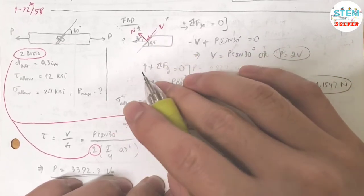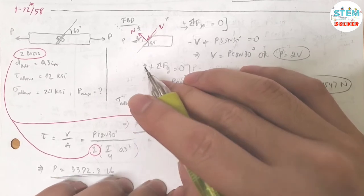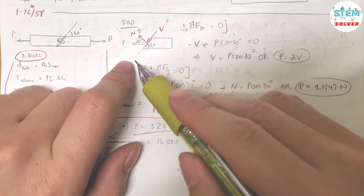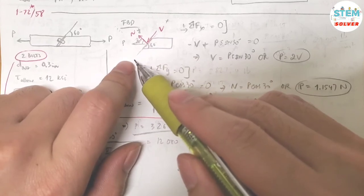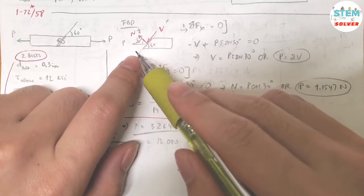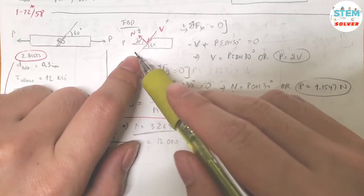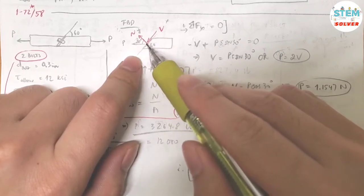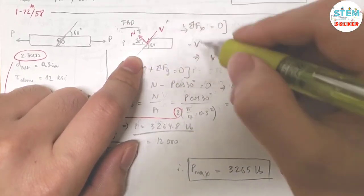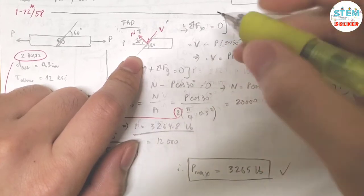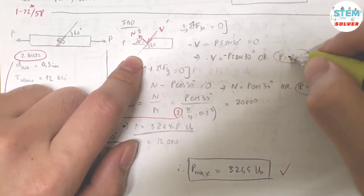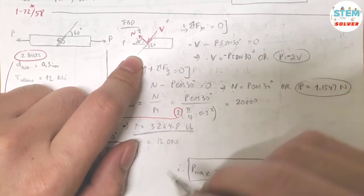So what I did was I took the summation about the X axis first. So I have negative V minus P times sine 30 equals zero. Then my V equals negative P sine 30, or P equals negative 2V.